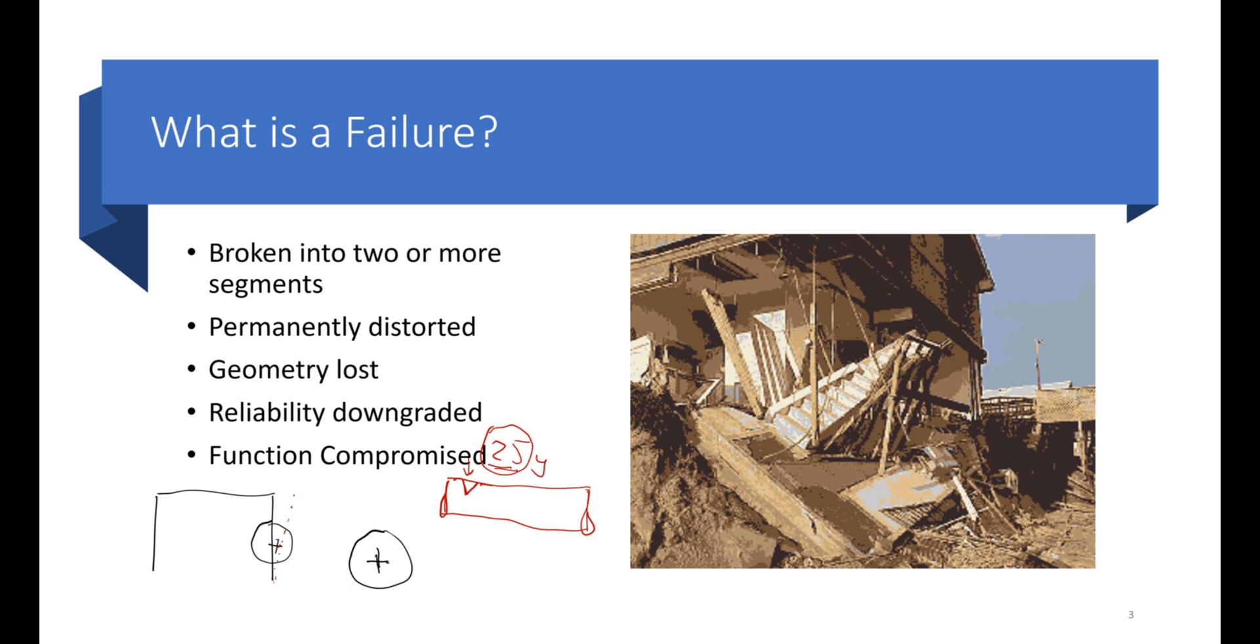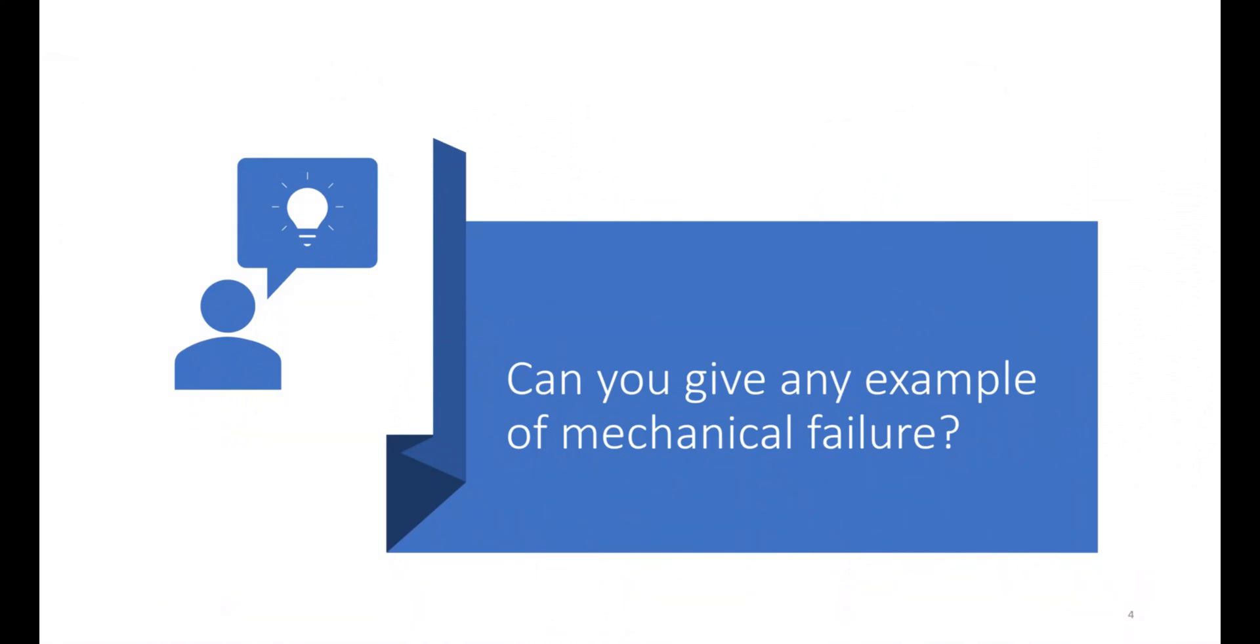So that is an example where we call it a failure again because of the function. So if some machine is not performing its function well, we call it a functional failure, so the function of that object or machine is compromised. Problems are one or any or more than one of these problems can be faced in a mechanical structure or machine or a system and we call this as a failure.